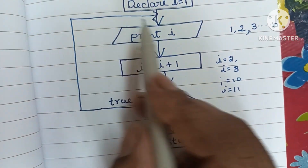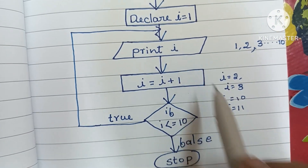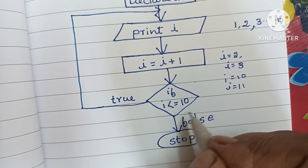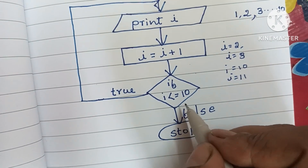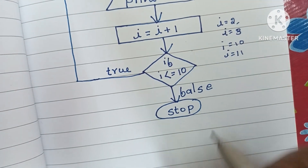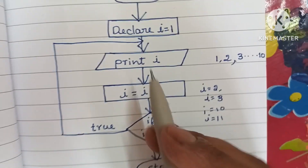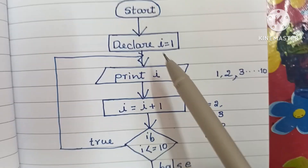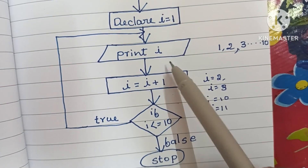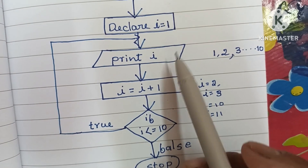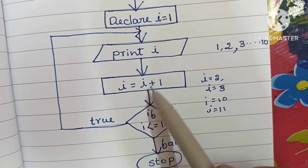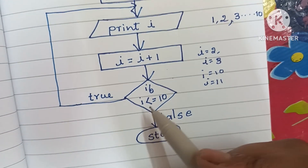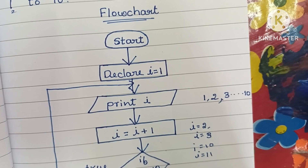If i value is less than or equal to 10 and the condition is true, it goes back to print the value of i and repeats until i is greater than 10. If the condition is false, we stop the flowchart using the stop statement. So: start and stop are written in an oval shape, output in a parallelogram shape, declaration and calculation in a rectangular shape, and the condition in a diamond shape.